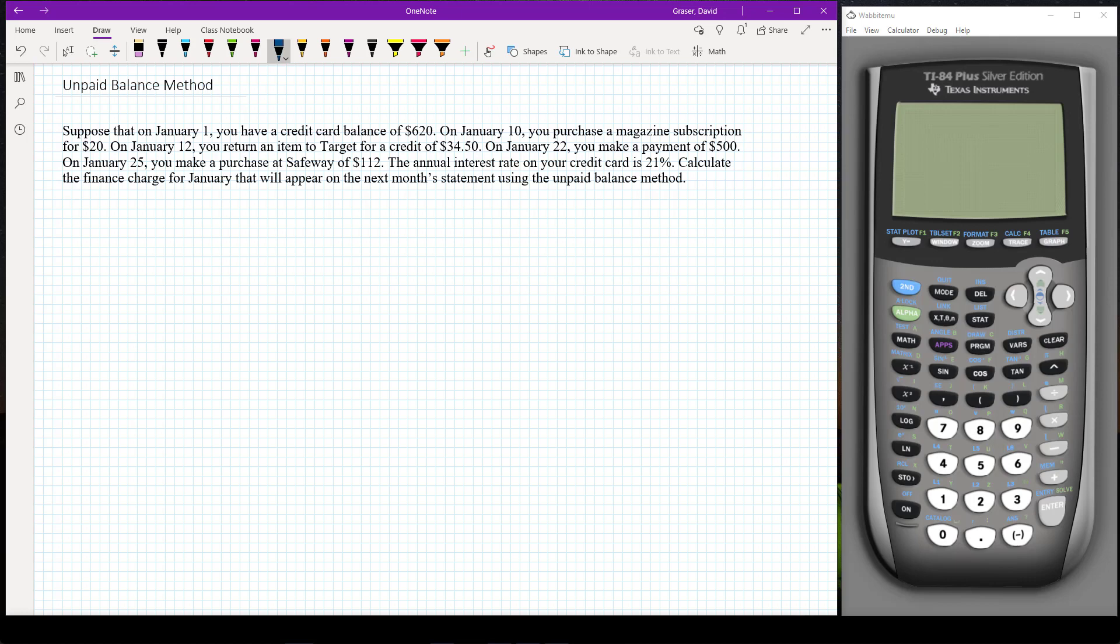So to find our finance charge which is simply interest I'm going to use I equals PRT. Remember the interest in this case is our finance charge, P is the present value, R is the interest rate, and we need to remember to put that in as a decimal. And then T is time.